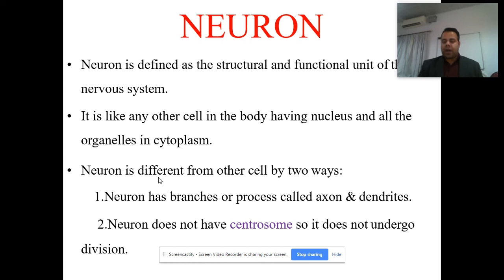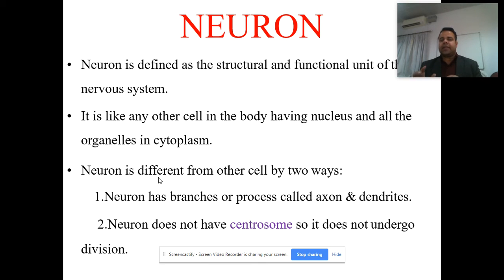Let us now discuss the neuron, which is the basic structural unit of the nervous system. The neuron is defined as the structural and functional unit of the nervous system. It is like any other cell in the body, having a nucleus and all the organelles in the cytoplasm. However, the neuron is different from other cells in two ways — it has branching processes called axons and dendrites.